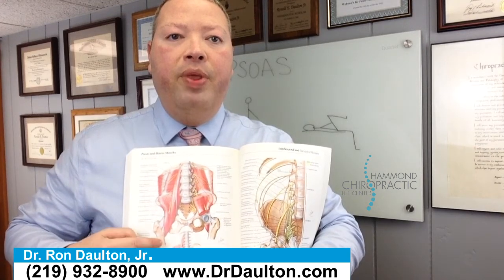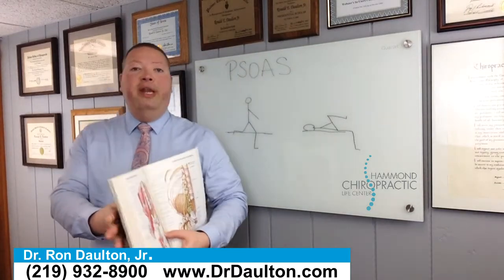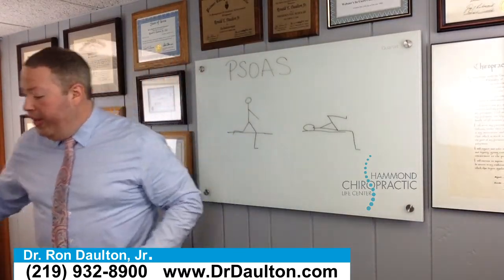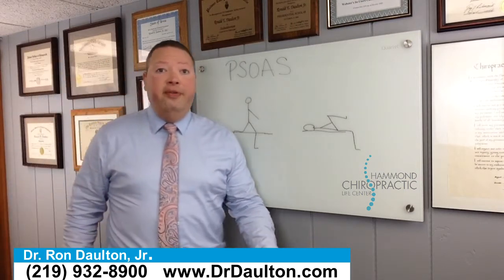The psoas muscle is this muscle right here — it attaches to the front of the spine and then comes down and attaches to the hip. It's tricky because it doesn't just attach to the bones; it also attaches to the discs in your lower back. The nerves that control this muscle are L1, L2, and L3, and those nerves are what causes that muscle to work.